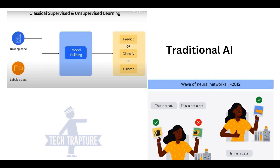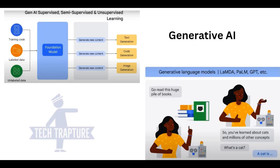Traditional AI provides output based on training data through prediction, classification, or clustering. Now for Gen AI, you also provide training code, but you provide both labeled and unlabeled data. Labeled data means I provide a cat image and label it as cat, a dog image labeled as dog — this is supervised learning. Unlabeled data is semi-supervised or unsupervised, where I provide huge amounts of unstructured text — for example, extensive Python documentation — and then ask a chatbot to give me Python code for a task, and it generates the code based on that training data.